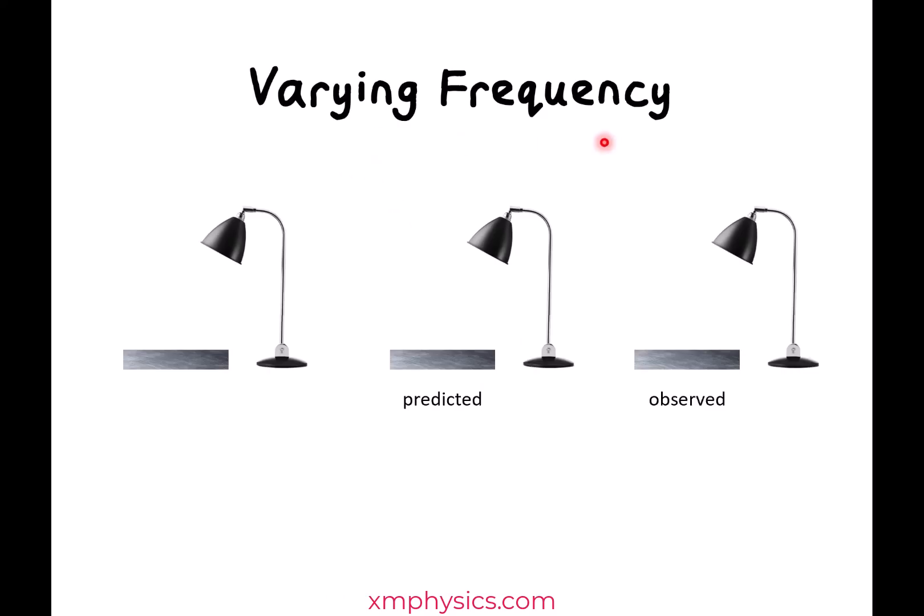Now, what if we change the frequency? Now, according to the wave model, the rate of transfer of energy of an EM wave depends only on the intensity. So whether it's yellow light or the higher frequency blue light, we should get the same exact emission, same rate, same KE max.